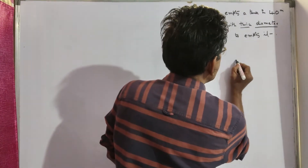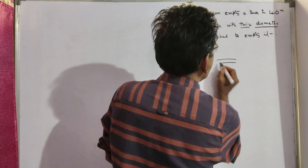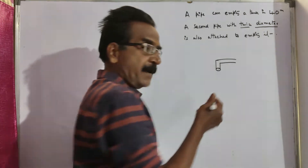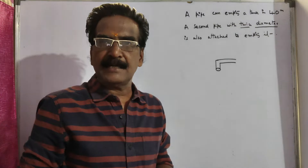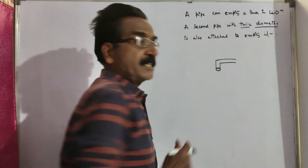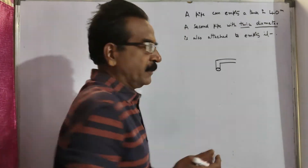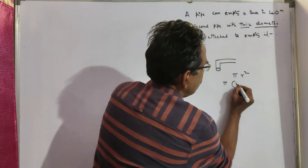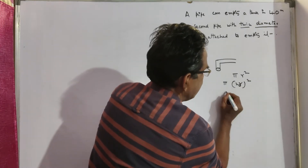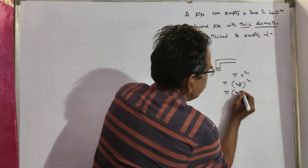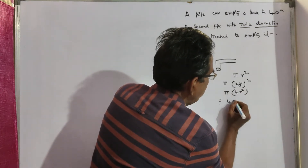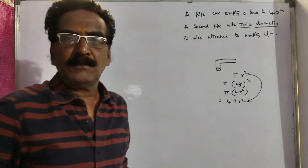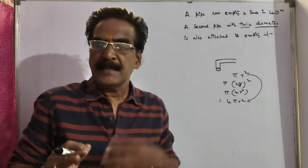If the diameter is doubled, the radius of that cross section is also doubled. See, this is a circle — the area of the circle is πr². If the radius is doubled, we take 2r in place of r, giving π(2r)² = π × 4r² = 4πr². So if the radius is doubled, the area becomes four times.